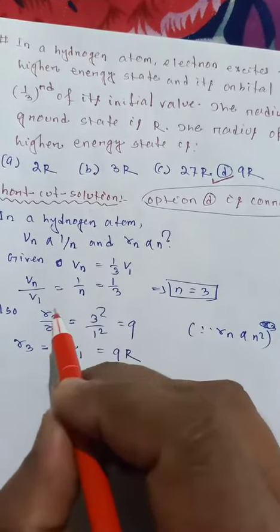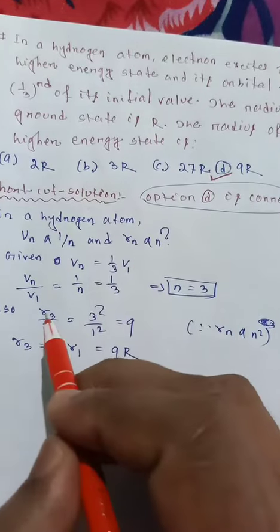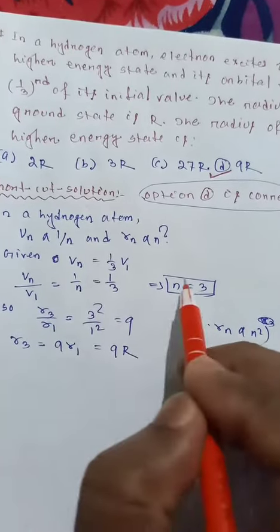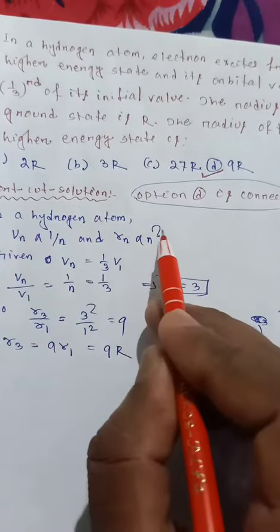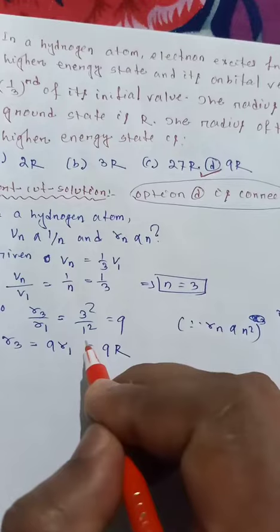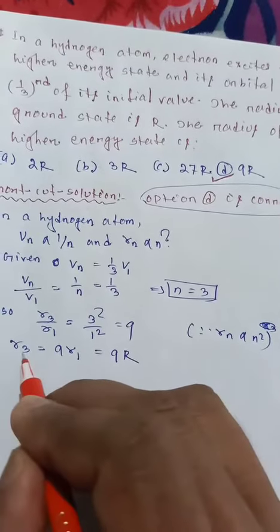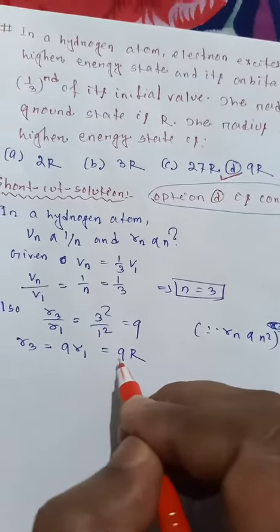But in case of R3, similarly RN by R1, where N equals 3, is 3 by 1. So 3 squared, because RN is directly proportional to N squared. So 3 squared over 1 squared is 9. Therefore, R3 equals 9 times R1, which equals 9R.